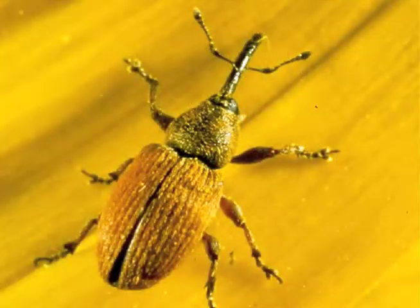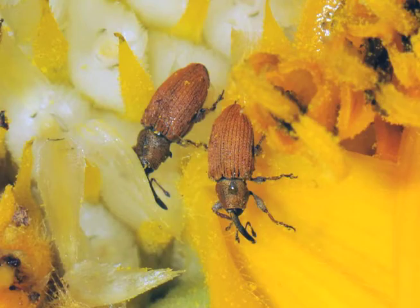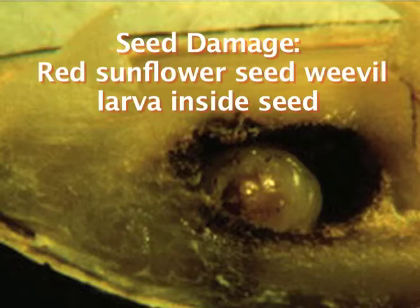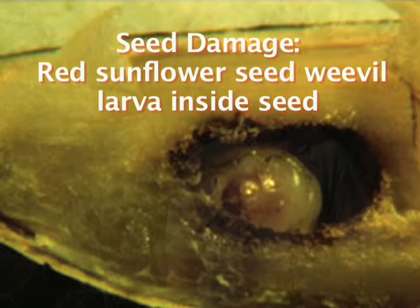Red sunflower seed weevil is about an eighth of an inch long and reddish brown in color. The larvae consume about a third of the kernel, which reduces the seed weight and oil content of the sunflower.